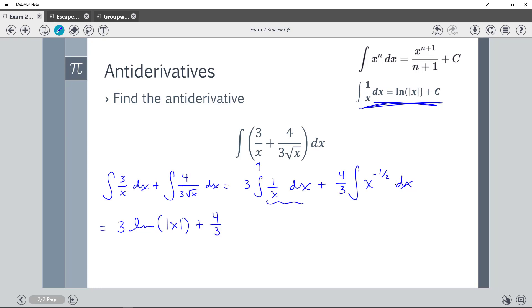So x to the negative 1 half plus 1. I'm going to write it as 2 over 2, negative 1 half plus 1.